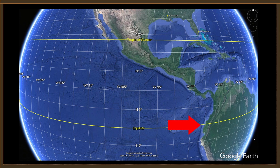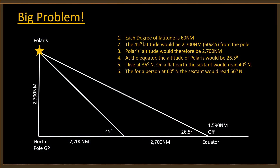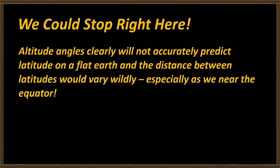26.5 degrees corresponds to 1,590 nautical miles north of the equator. So I'm trying to find Ecuador on the equator, but my sextant tells me I'm off the coast of Baja — I can't even find Central America. At 36 degrees north latitude, the sextant would tell me I'm at 40 degrees north — 240 nautical miles north of my actual position. A person in Stockholm at about 60 degrees north latitude would be told they're at 56 degrees — 240 nautical miles south of their actual position.